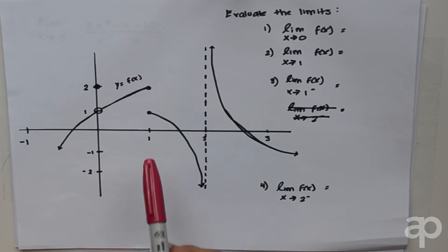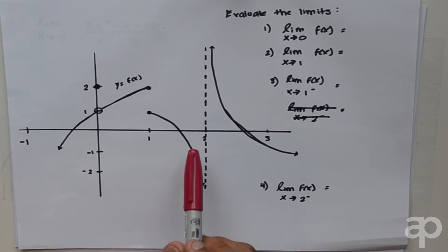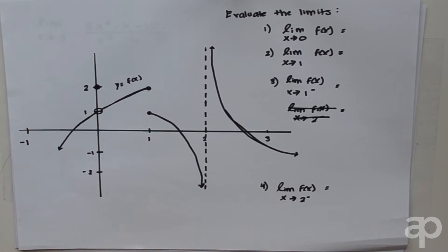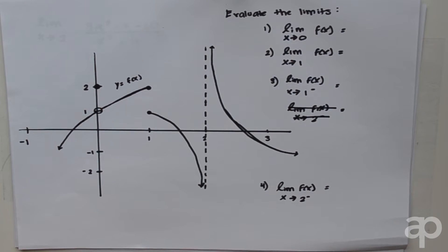Notice the discontinuities at x equals 0, x equals 1, and x equals 2. At x equals 0 there's a hole, at x equals 1 there's a plain old discontinuity, and at x equals 2 there's an asymptote. However, these discontinuities aren't that big of a deal and we will still be able to solve the limits.